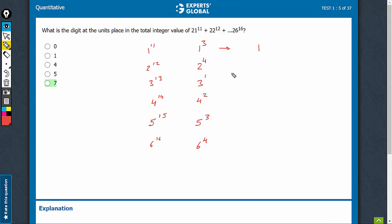1 raised to power 3 gives 1, 2 raised to power 4 gives 6, 3 raised to power 1 gives 3, 4 raised to power 2 gives 6, 5 raised to power anything positive will give 6.